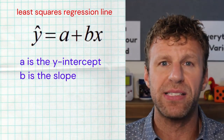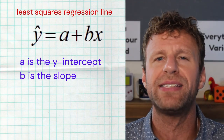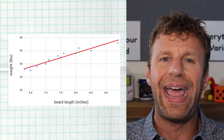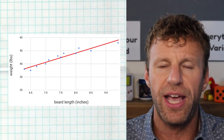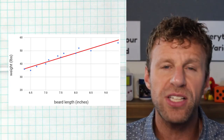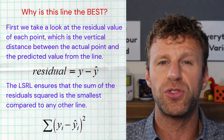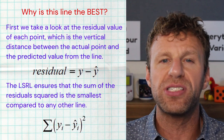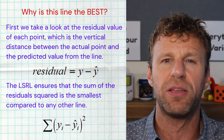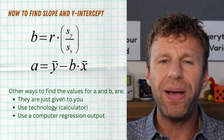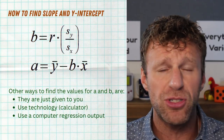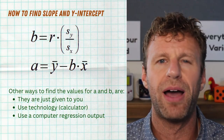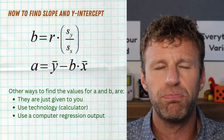Why is it the best line, not just any line? Because it has the smallest sum of squared residuals. The residual is the distance between an actual point and what the line predicts. Some residuals are positive, some negative. If we square all those residual values and add them together, we get a number, and for the least squares regression line that sum is smaller than for any other line — that's what makes it the best. To find this line: best case, it's given to you, which happens often on the AP exam. Second best, it comes from a computer output table.